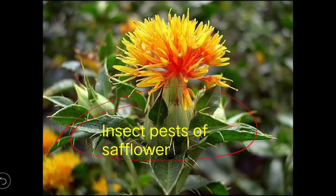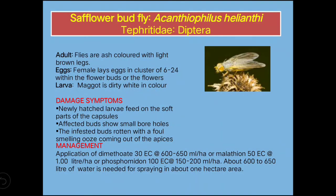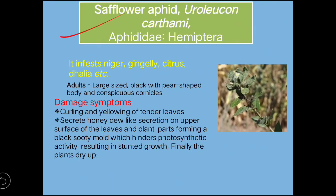Next, the insect pests of safflower. Remember the safflower bud fly: scientific name Acanthiophilus helianthi. The most important insect pest is aphid; the safflower aphid's scientific name is Uroleucon carthami, family Aphididae, order Hemiptera. The damage symptom is the same as other aphids.